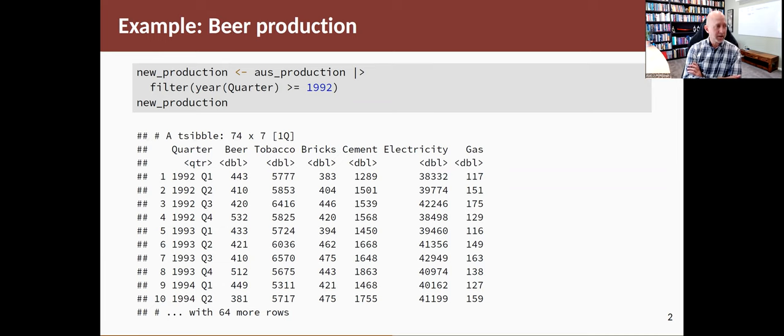The data has seven columns. There's six different commodities that are produced and a value for each quarter. I'm interested here in the beer production for Australia.